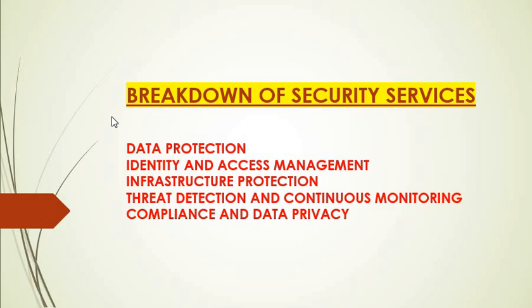There are many AWS security services that we can categorize based on a few things: data protection, identity and access management, infrastructure protection, threat detection and continuous monitoring, compliance, and data privacy. All services have different purposes and can be broken down into these different categories.